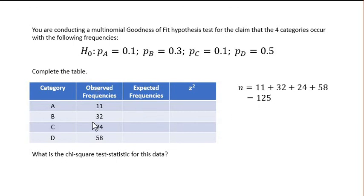So there's 125 total observations and we should expect 10% of them to be from category A, 30% to be from category B, 10% to be from category C, and 50% to be from category D. So I find all those percentages of 125, 10, 30, 10, and 50. And these are the expected values for those individual categories. Once we know the expected values, we can put them into the table.